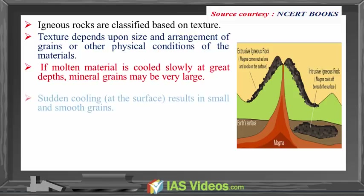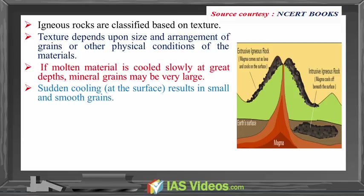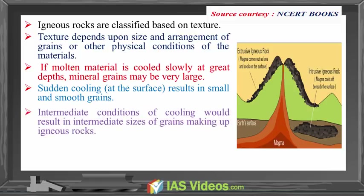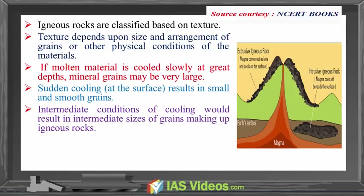Intermediate conditions of cooling would result in intermediate sizes of grains making up igneous rocks. Granite, gabbro, pegmatite, basalt, volcanic breccia and tuff are some of the examples of igneous rocks.